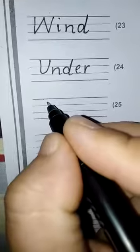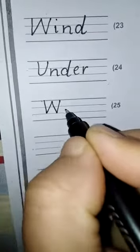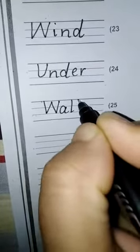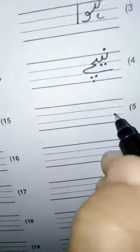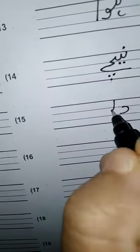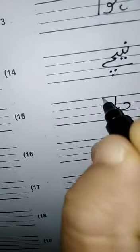Next word is wall. W-A-L-L, wall. Wall mean diwar. Dal yeh di, wao alif wa, re diwar. Next word is again.